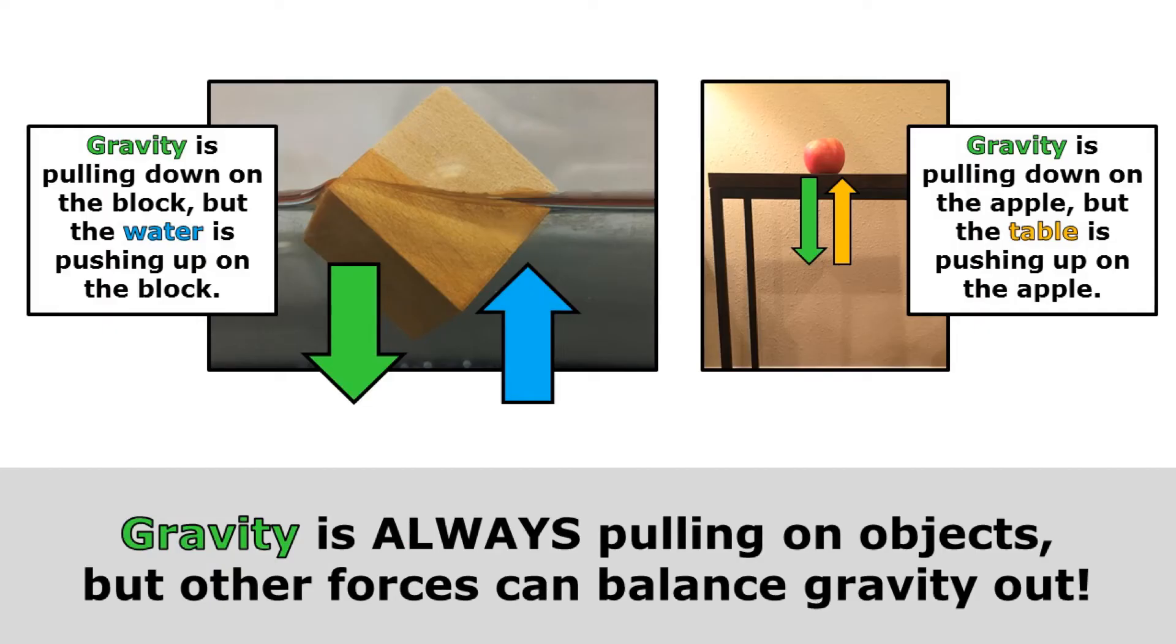Gravity is always pulling on objects, but other forces can balance gravity out. Gravity is pulling down on the block, but water is pushing up on the block. So the block is floating on the surface of the water. That's not because gravity isn't working, it's because water is pushing back. The same thing with the apple. Gravity is pulling down on the apple, but the table is pushing up on the apple. So those two forces balance each other out, and the apple is just sitting still on the table.